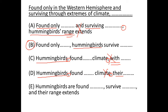In option E, we have 'hummingbirds are found, survive, and their range.' In the list, 'are found' and 'survive' are parallel and must be connected through 'and,' but we cannot use just a comma to join two parallel elements — so 'and' is missing. Eliminate E. Hence, B is the correct answer. Thank you.